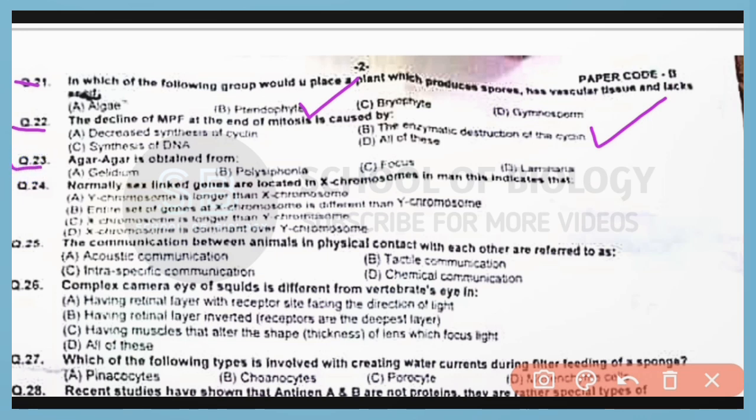Question number 23. Agar-agar is a protein that is obtained from Gelidium species. Correct answer is option A.